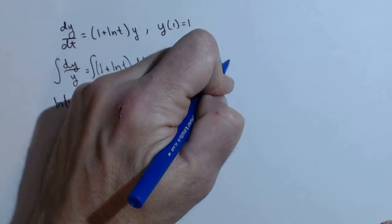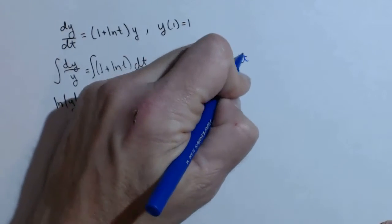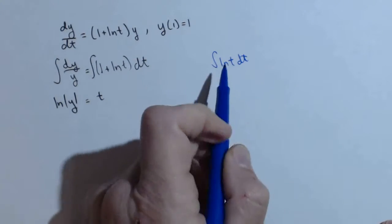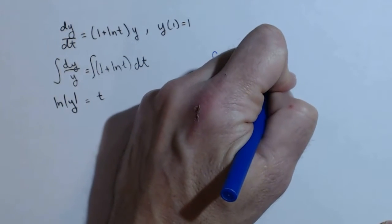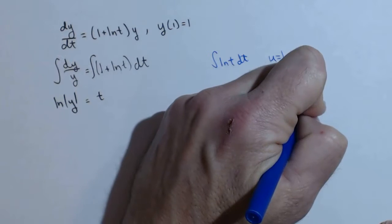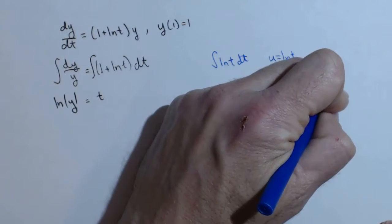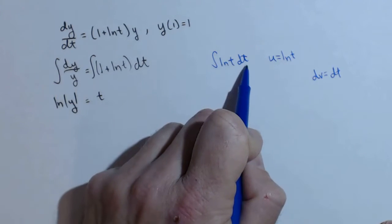You do not have to have it memorized, but you need to know how to find it. And it's an integration by parts. u equals ln of t, dv equals dt. So that takes up the whole thing.